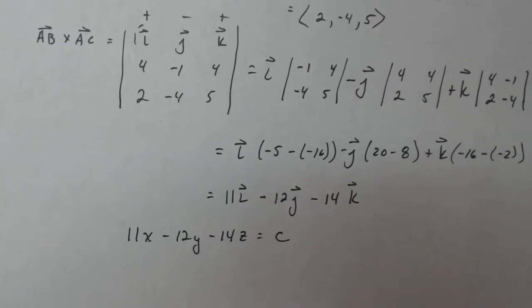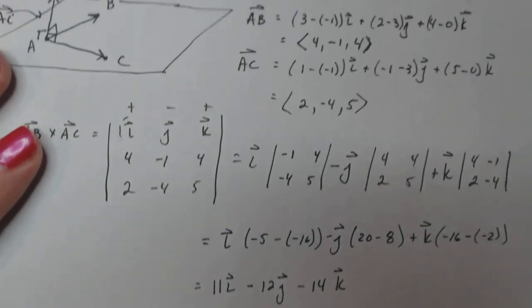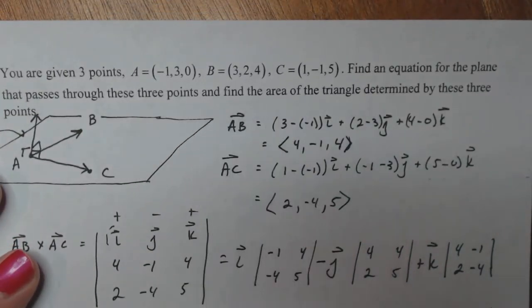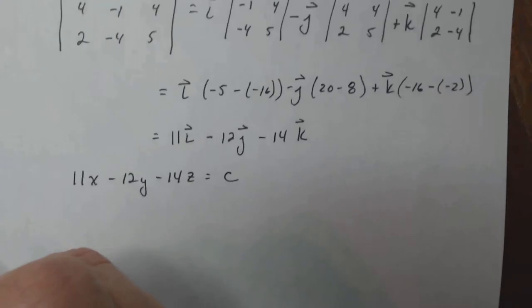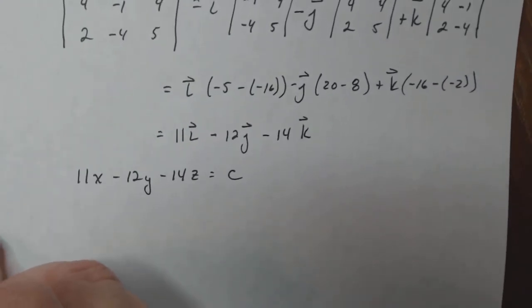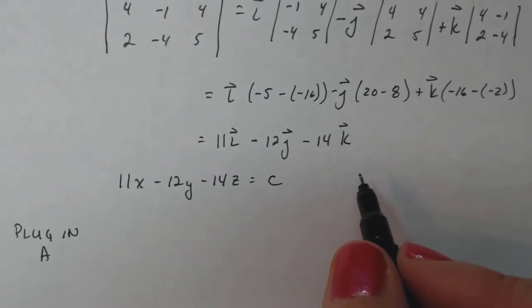But in mathematics, if we have an unknown constant in an equation or a relationship, we just have to take one of the ordered pairs that we know lies on the plane and then solve for C. And we have three ordered pairs that lie on the plane. So let's just choose one, plug it in and see if it works. So down here, we're going to plug in point A because it's got a zero in it. It doesn't matter which one you do, it'll turn out the same.